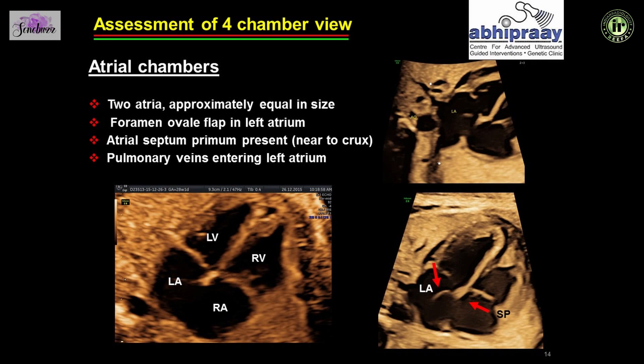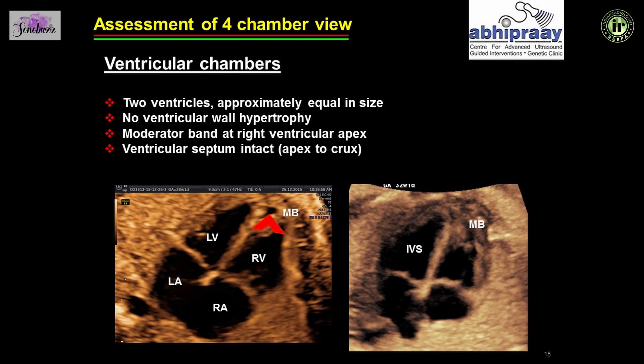Looking at the four chamber view, you assess the atrial chambers — there have to be two atrial chambers of approximately equal size. The foramen ovale flap opens into the left atrium, the inter-atrial septum has to be seen, and the pulmonary veins enter the left atrium. The ventricular chambers in fetal life have to be approximately equal in size with no ventricular wall hypertrophy. The moderator band is seen at the right ventricular apex, and the interventricular septum has to be intact from the apex up to the crux of the heart.